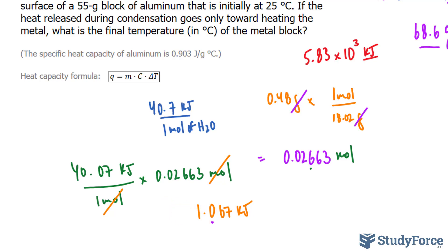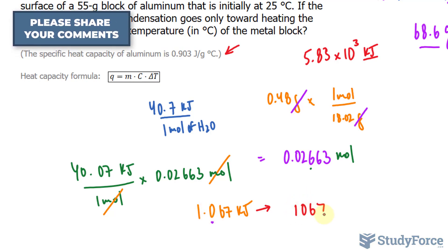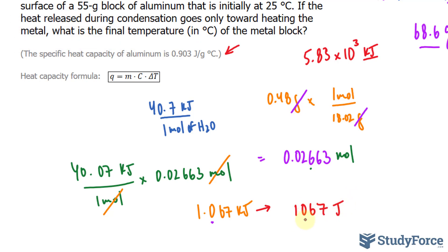Now, interestingly, the question gives us the specific heat capacity of aluminum, and it's in joules. So I'm going to convert this into joules, and I can do that by taking this decimal place three times to the right, where I end up with 1067 joules. Don't forget, it's two significant figures.